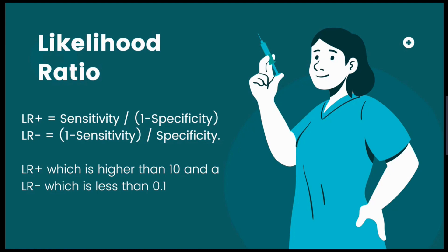You should see both a positive likelihood ratio and a negative one. A positive ratio is calculated as sensitivity divided by one minus specificity, while a negative ratio is calculated as one minus sensitivity divided by specificity. You want to ideally see a positive ratio which is higher than 10 and a negative ratio which is less than 0.1.